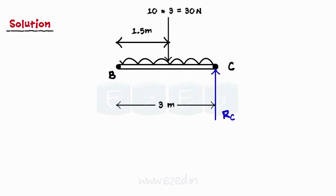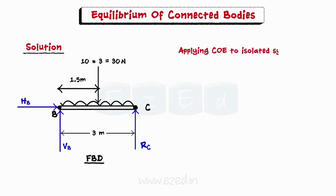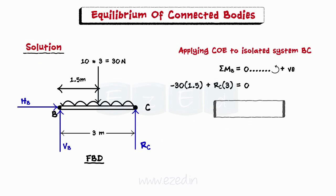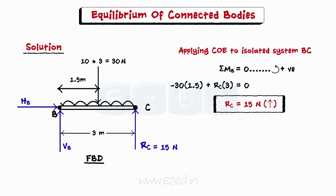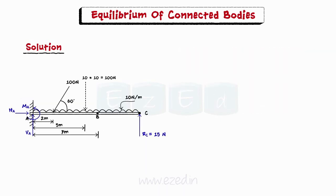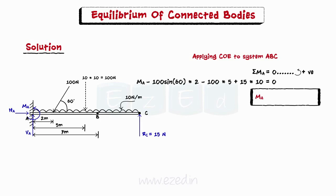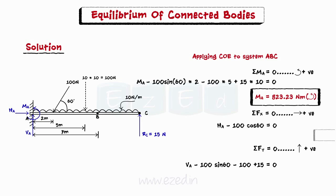Part BC is isolated and its FBD is shown. On isolation, the internal hinge reactions HB and VB can be seen at point B. Applying conditions of equilibrium to isolated system BC, and finding the summation of moments of all forces at point B and equating to zero, we find RC is equal to 15 N. Then, analyzing the entire system ABC and equating the summation of moments about A to zero, we find the moment at A is equal to 823.2 Nm anti-clockwise. By finding summation of forces in x and y directions, we find HA is 50 N and VA is 171.6 N.